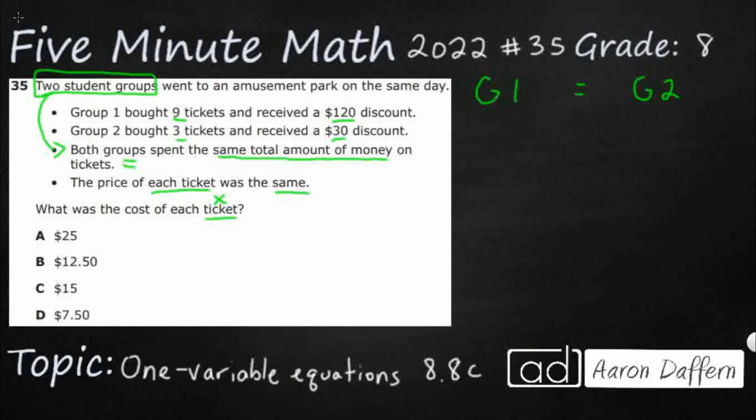Let's start substituting what we know about group one and group two. Group one bought nine tickets. Each ticket is the same cost. So whenever I see ticket, I'm going to just put an X right there. So group one has got nine tickets. Now, $120 discount. That's a word that we need to kind of know. It's not going to be defined for us, but when you take a discount, that means you're taking money away. So it's actually going to be 9X minus 120.